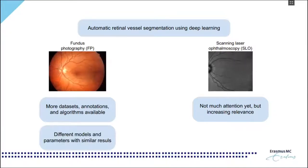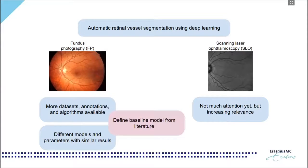There are several published approaches for deep learning based vessel segmentation on fundus using different architectures and parameters. The first goal of this work is to define a baseline model based on literature that obtains accurate performance. Then we can tackle the main goal of the paper, which is to study if it is possible to train the model in one modality and obtain accurate results in the other.